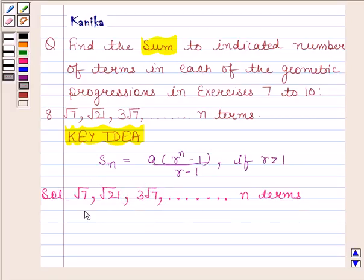Now here, the first term that is A is equal to root 7. Common ratio that is R is equal to root 3, and root 3 is greater than 1.